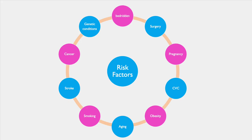The platelets attack the site of the embolus, naturally creating constriction of the blood vessel. Patients at risk for a PE include bedridden patients with prolonged immobility, surgery, pregnancy, central venous catheters, obesity, aging, smoking, stroke, cancer, or genetic conditions that increase blood clotting.